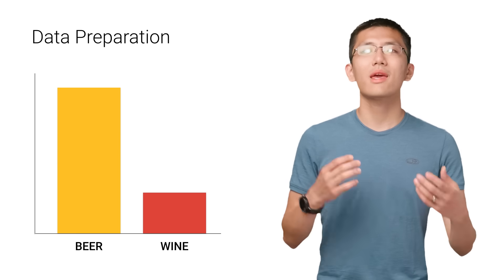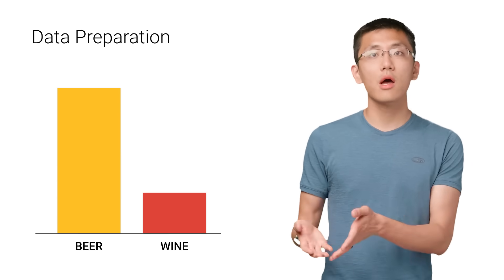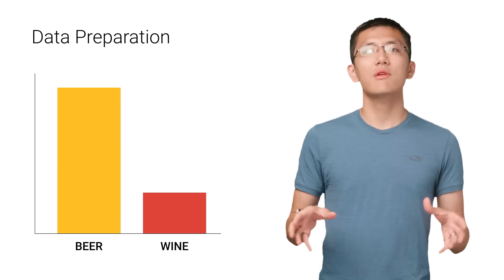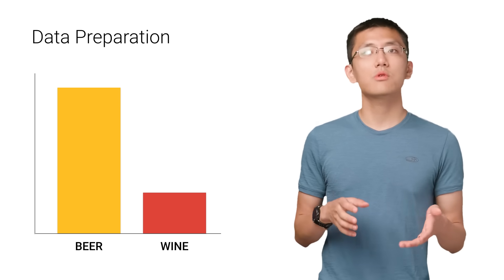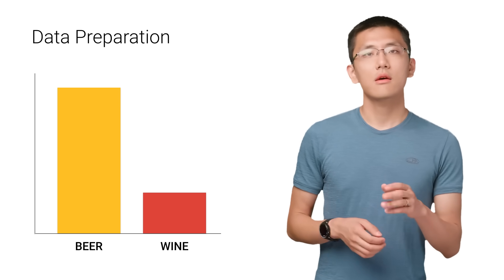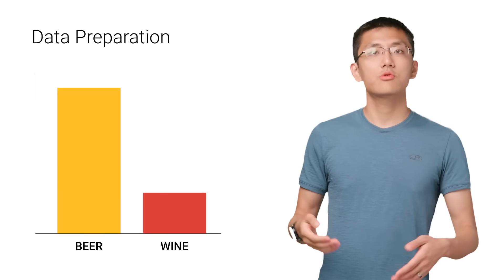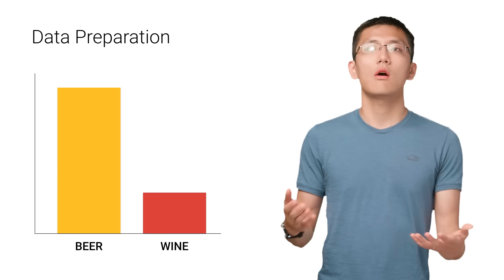For instance, if we collected way more data points about beer than wine, the model we train will be heavily biased toward guessing that virtually everything it sees is beer, since it would be right most of the time. However, in the real world, the model may see beer and wine in equal amount, which would mean that it would be guessing beer wrong half the time.